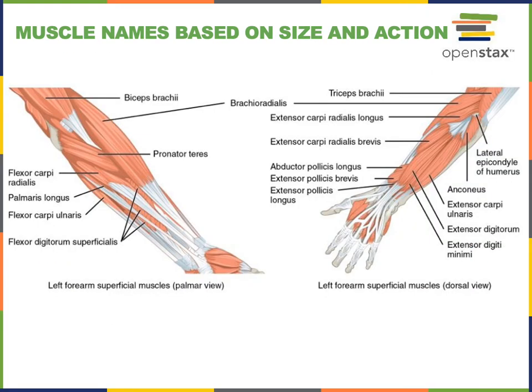Muscles are also named based on their relative size and their action. For example, extensor carpi radialis longus, located on the posterior antebrachial region, is slightly longer than extensor carpi radialis brevis. Both of these muscles are named after the action of extending the radiocarpal joint.